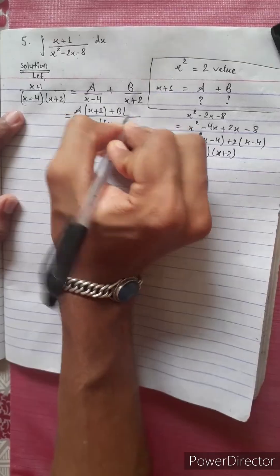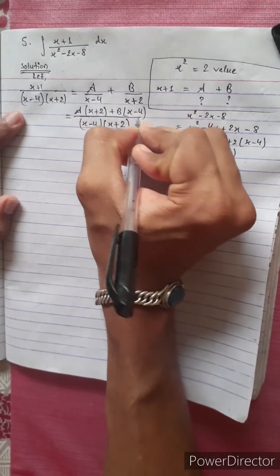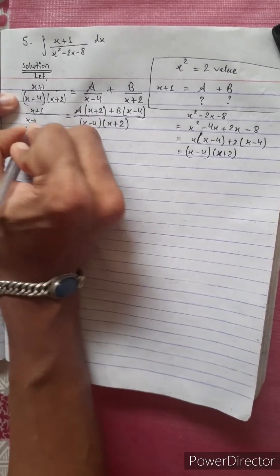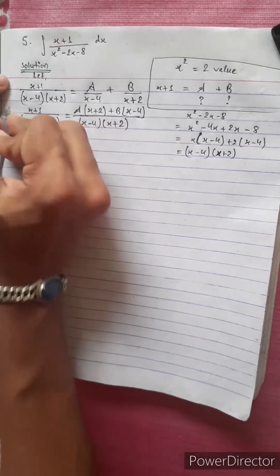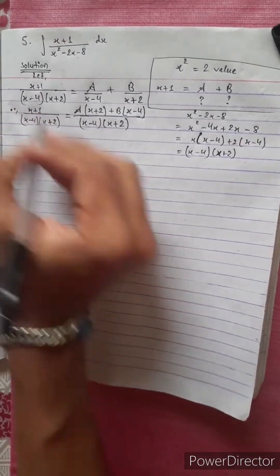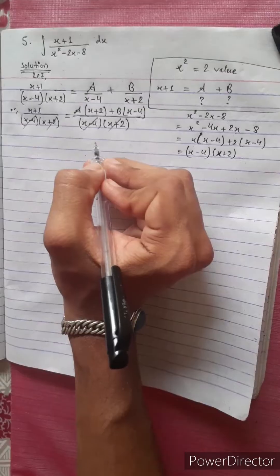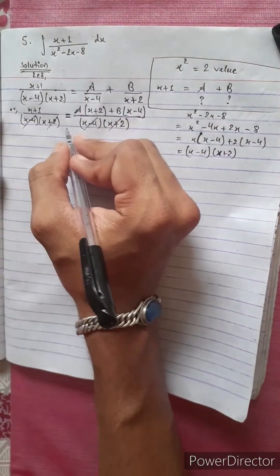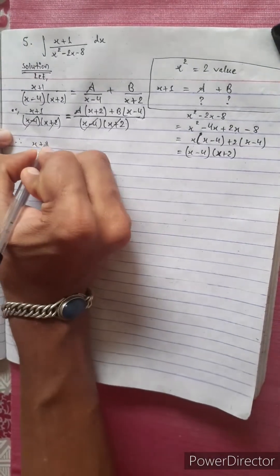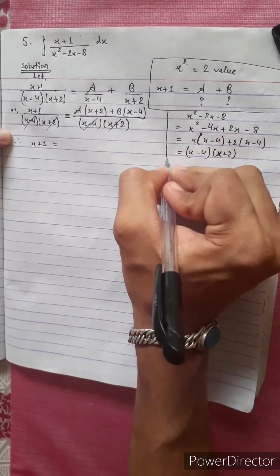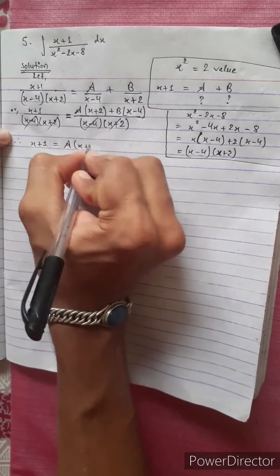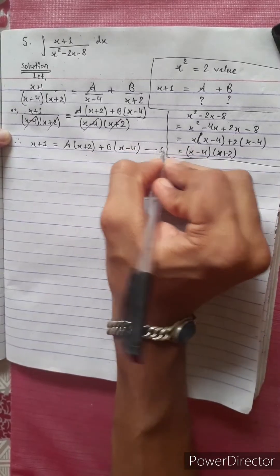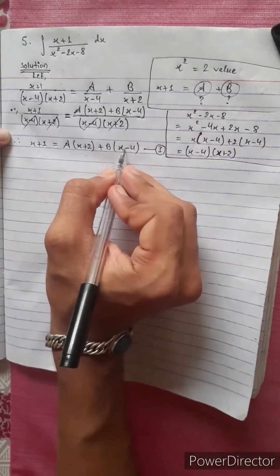We write A divided by (x minus 4) plus B divided by (x plus 2). Multiplying through, we get A(x plus 2) plus B(x minus 4). This equation is our identity, equation 1. From this we can find the values of A and B.